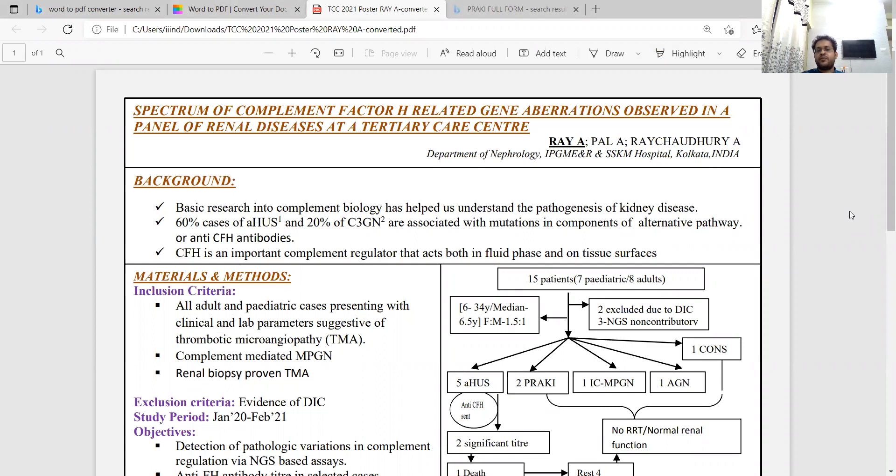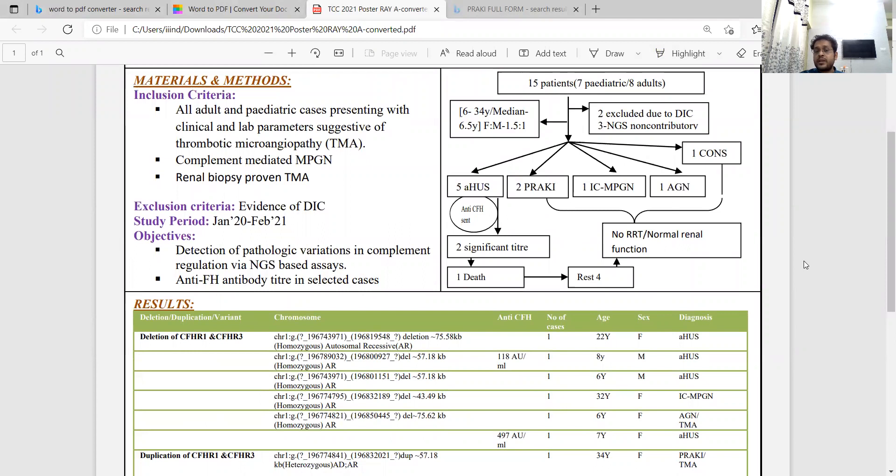Today, I would like to share my poster regarding the spectrum of complement factor-regulated gene disorders in various nephrological diseases coming to our hospital between January 2020 to February 2021, comprising all adult and pediatric patients suffering from thrombotic microangiopathy, also complement-mediated MPGN cases like C3GN and dense deposit disease. We also took patients with renal biopsy evidence of TMA.